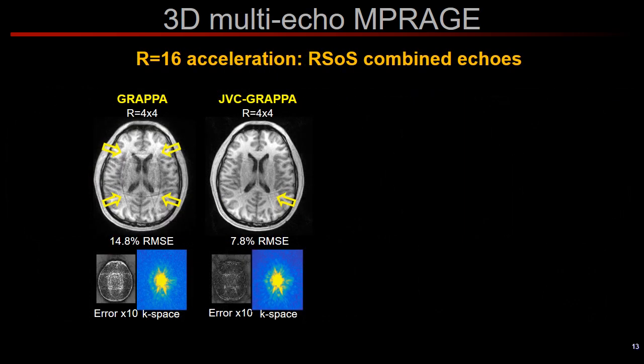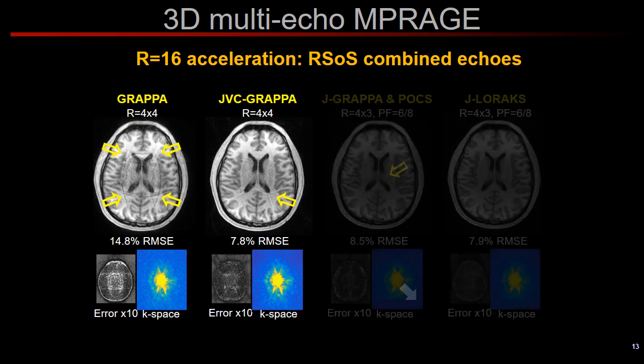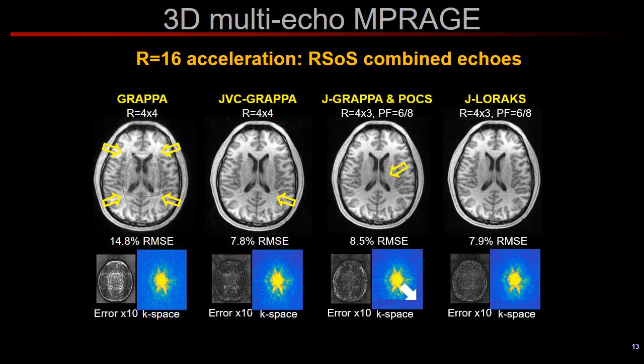Pushing the acceleration to 16-fold caused GRAPPA to break down, and even JVC-GRAPPA suffered from unresolved folding artifacts. Combining 12-fold undersampling with two-dimensional partial Fourier allowed us to reach the same net acceleration factor of 16-fold. While Joint GRAPPA with POCS reconstruction was relatively successful despite such high acceleration, there was still some underestimation in the partial Fourier portion of k-space. J-LORAX was able to mitigate this issue and provided low RMSE with high image quality.